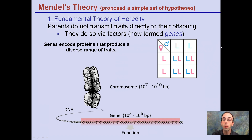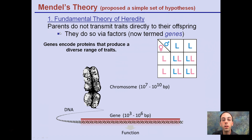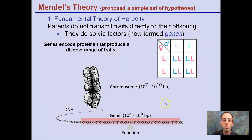One of the first theories he came up with is the fundamental theory of heredity: parents do not transmit traits directly to their offspring. They do so via factors called genes, and this is what we're tracking in our Punnett squares. Our genes are a segment of DNA that encodes for a very specific amino acid sequence or a specific protein.